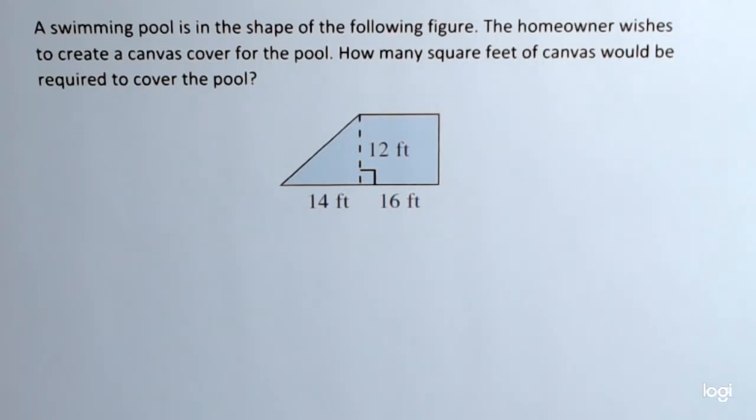A swimming pool is in the shape of the following figure. The homeowner wishes to create a canvas cover for the pool. How many square feet of canvas would be required to cover the pool?